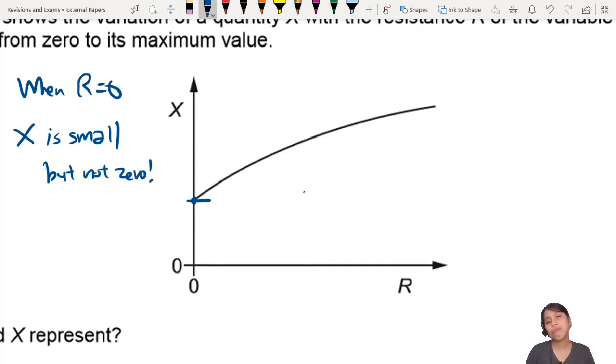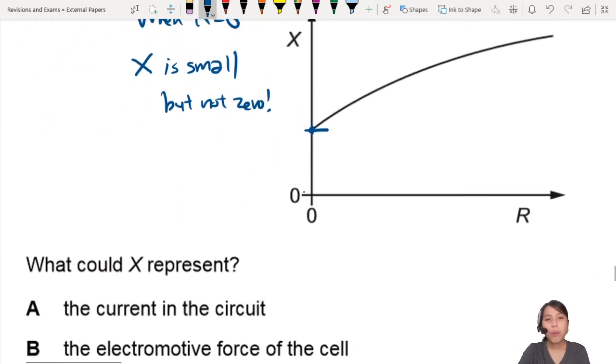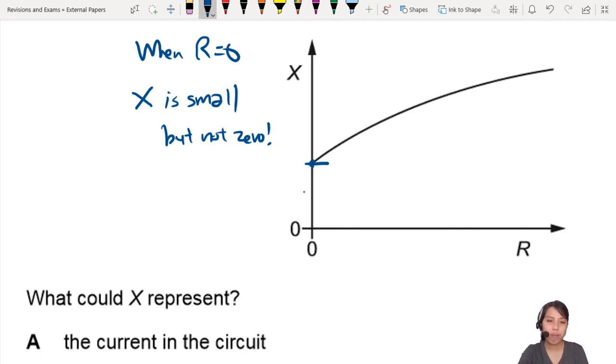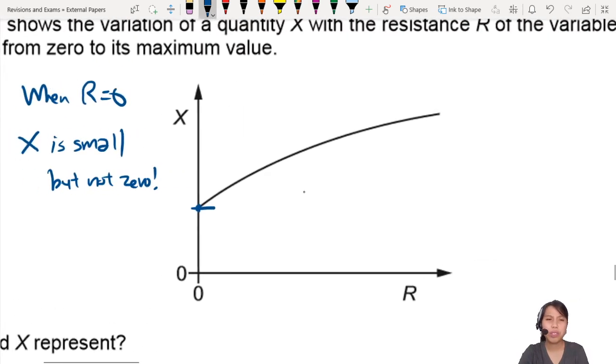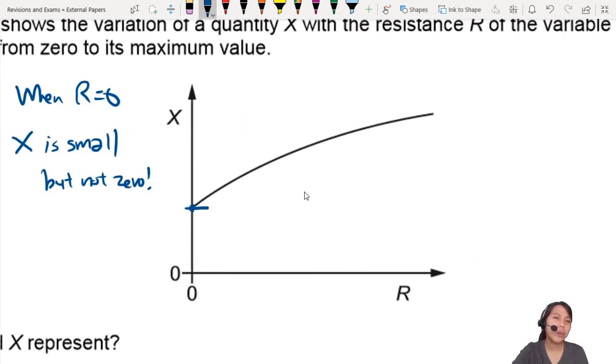So when there's no resistance, this quantity is small, but not 0. That's a clue. What are the choices here? Let's go through each of them. What could X be? Current in the circuit. When R is 0, is current small? No, I don't think so. It's not current.